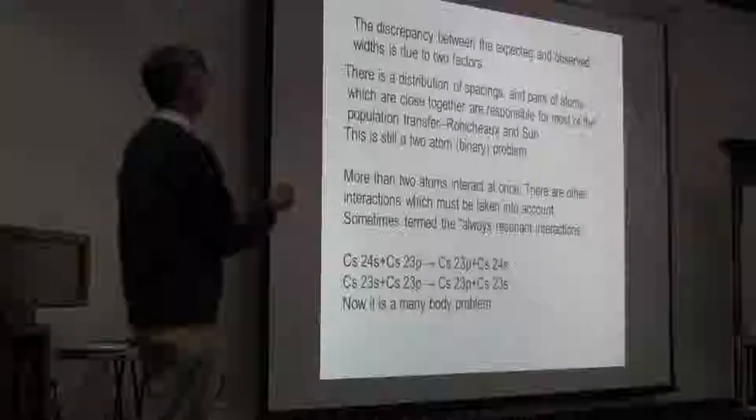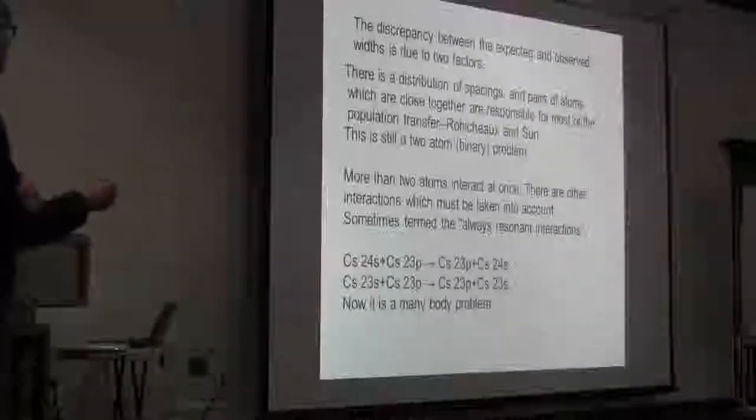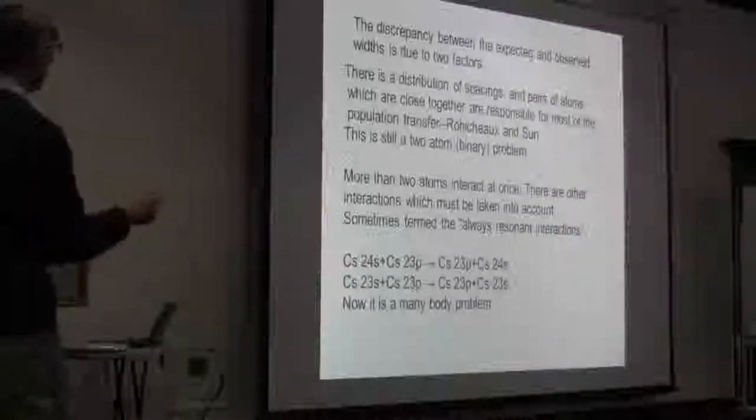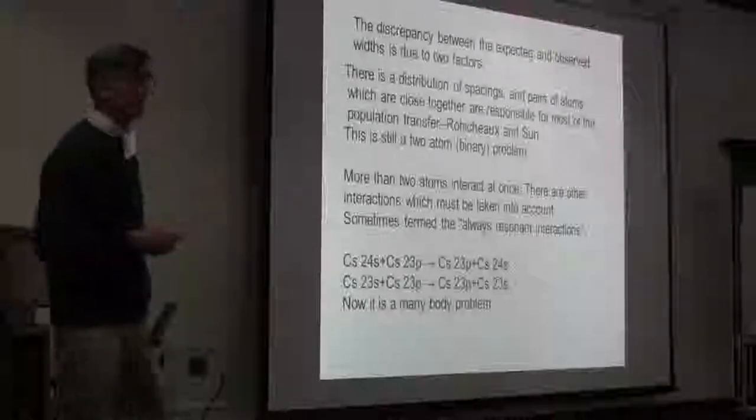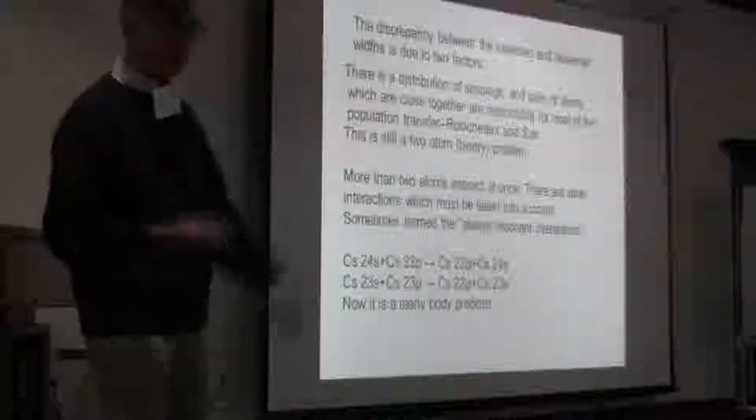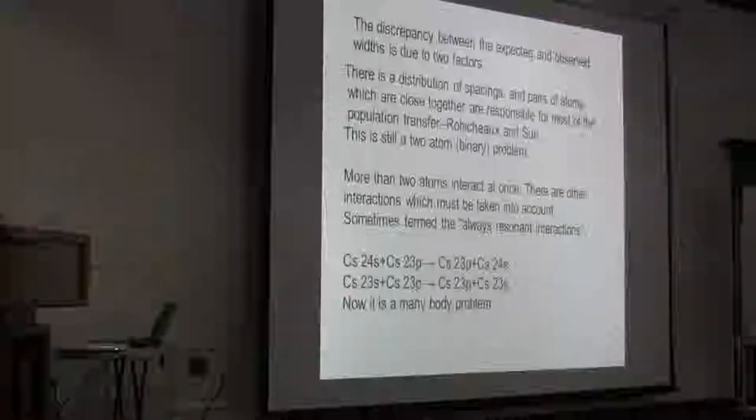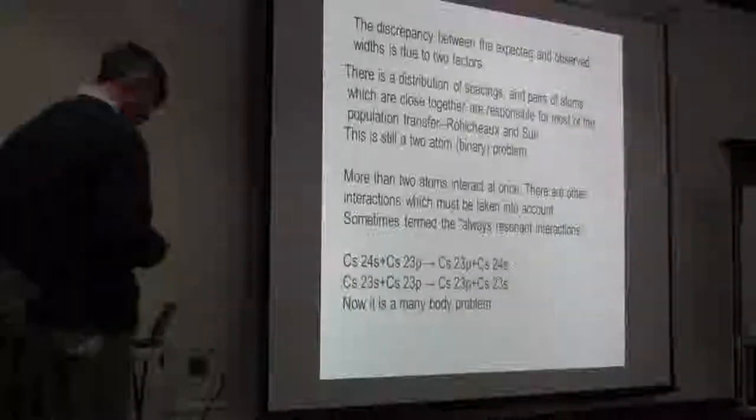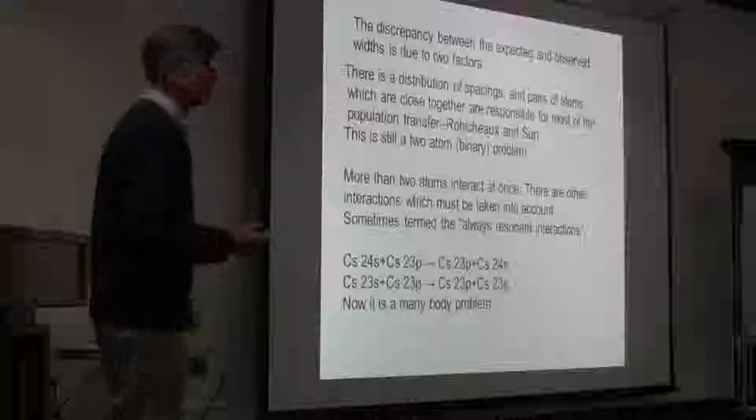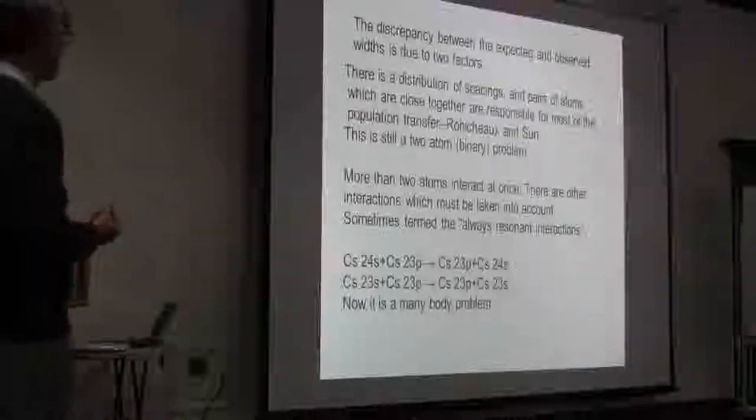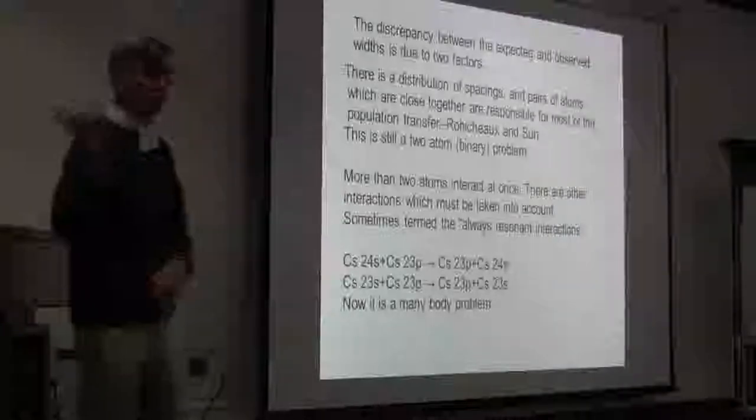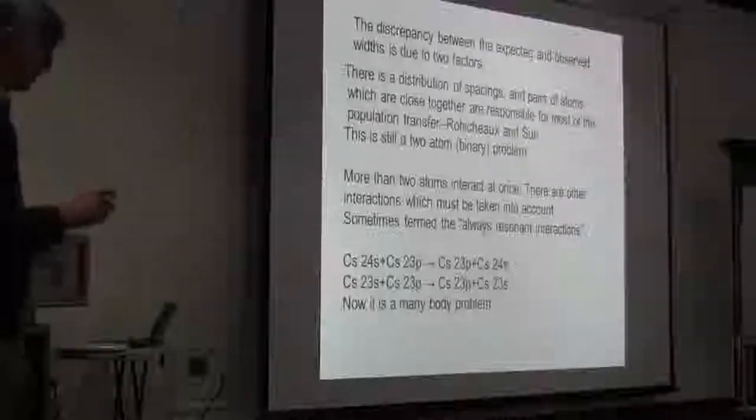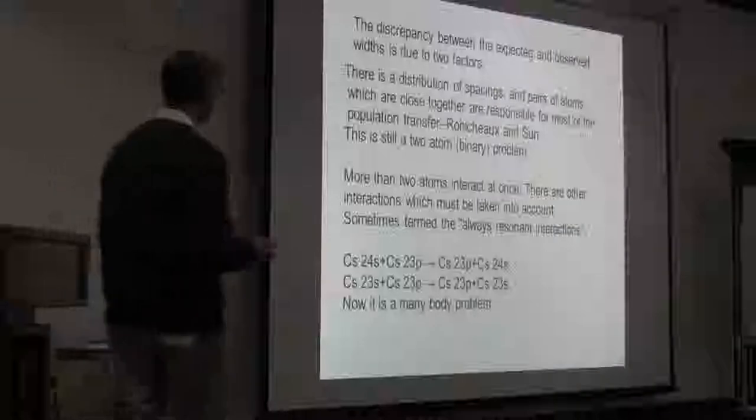The discrepancy between what was expected and observed is due to two factors. One, which we pointed out on Francis Wilkerson: while it's true that you have an average spacing, what you're seeing as producing the transitions are the atoms that are closer to that. If you take into account the fact that at any density, you have a whole range of spacings that counts for some reasonable fraction of the width.